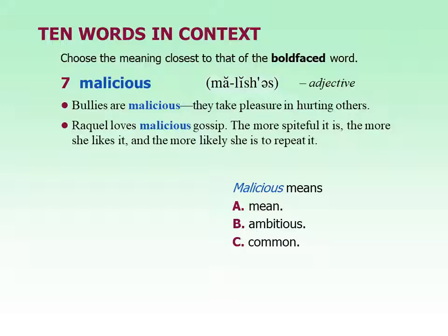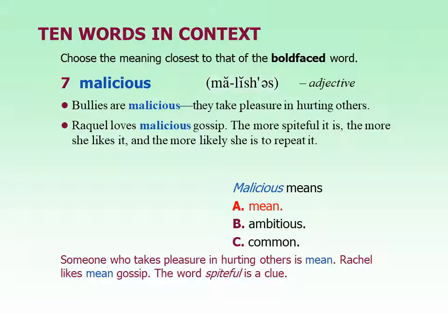The next one is malicious. It's an adjective. Bullies are malicious — they take pleasure in hurting others. Raquel loves malicious gossip; the more spiteful it is, the more she likes it and the more likely she is to repeat it. This means mean. Malicious is people being mean on purpose — it's not an accident, they're trying to be mean. He was malicious when he said bad things about another boy in class, purposefully being mean. It's very negative.